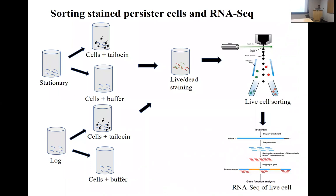Regarding synthesis of tailocins and what happens to the original cell: depending on the type of bacteriocin, some bacteriocins are secreted out of cells. But tailocins actually lyse the cells once they are released — it's been described as 'microbial altruism,' where the release of tailocins provides an advantage to sister or sibling cells nearby. The producing cell is killed once the tailocins are released.